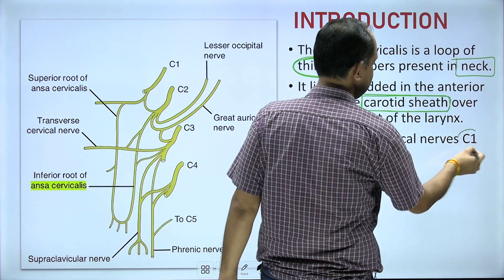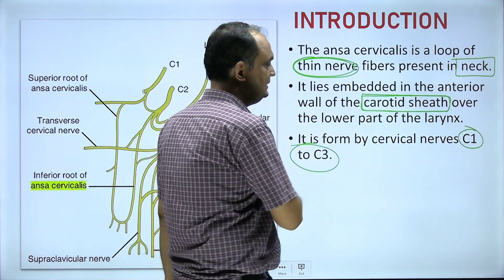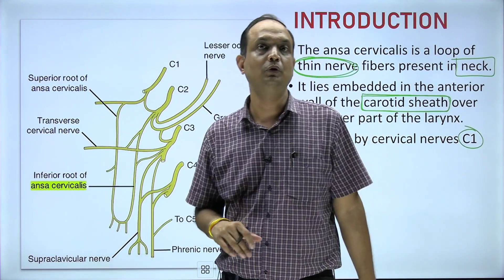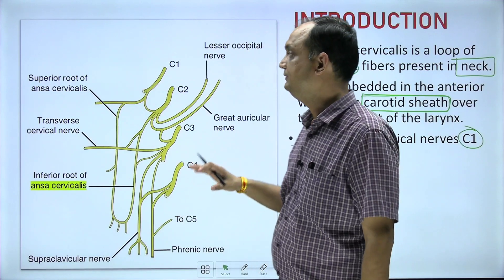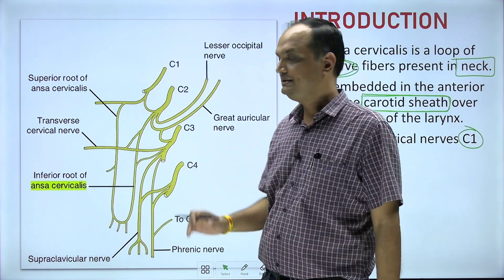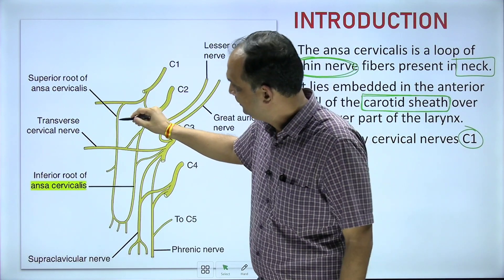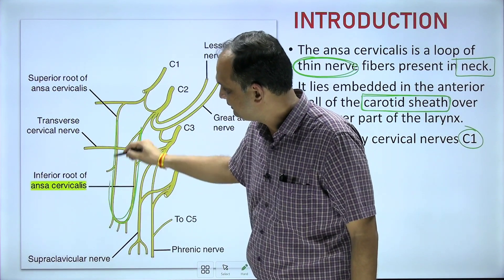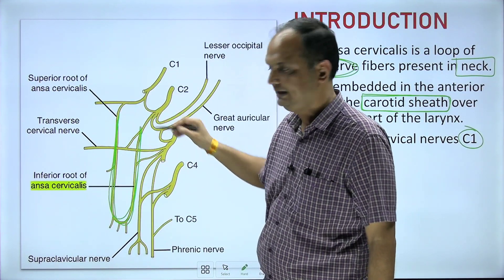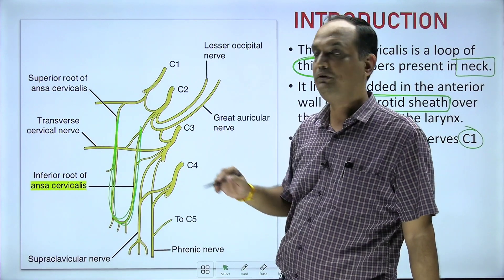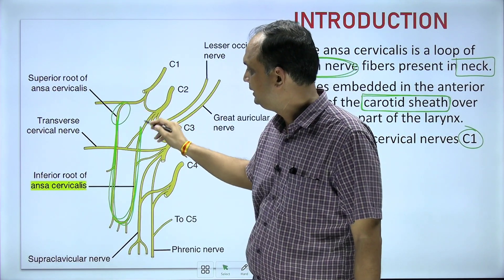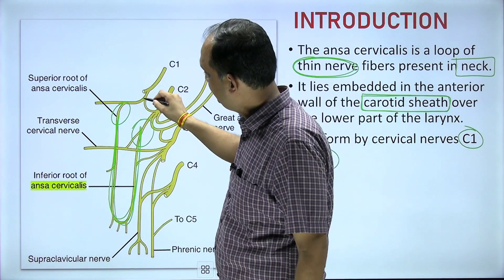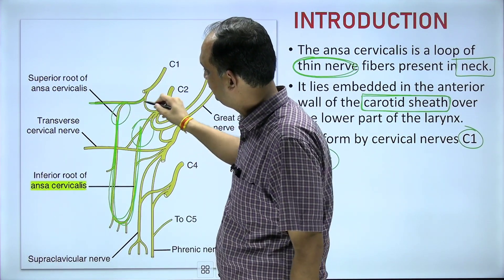The ansa cervicalis is formed by cervical nerves C1, C2, and C3 — so the root value is C1, C2, C3. Every loop has two parts: this is one part and this is the second part of the loop. One part is coming from the hypoglossal nerve.